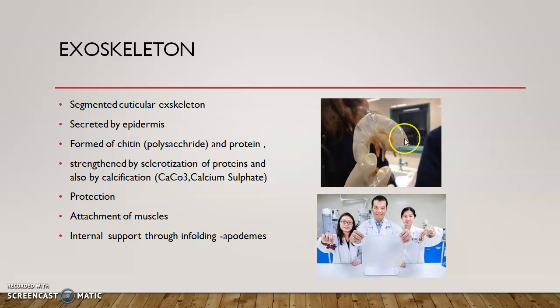This is a picture of the cuticle of the prawn — the skin that we remove while cleaning. You might be familiar with this type of prawn cuticle. The chitin substance is processed and you get a sheet of chitin which can be used for many purposes. It has wide varieties of applications like use as stabilizers in wine, in paint industries, and as a source of calcium, among others.